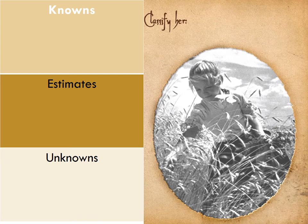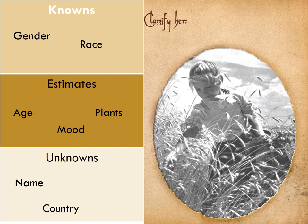In this picture you can see there are some knowns. You know the gender, the ethnicity. Some estimates - you see if she is a child of a certain age, the mood you can see from her face. Plants, it's approximately maybe a wheat or a grain. Unknowns, you don't know her name, what country she is presently in, and the date of the photo. Being black and white doesn't really mean anything nowadays.